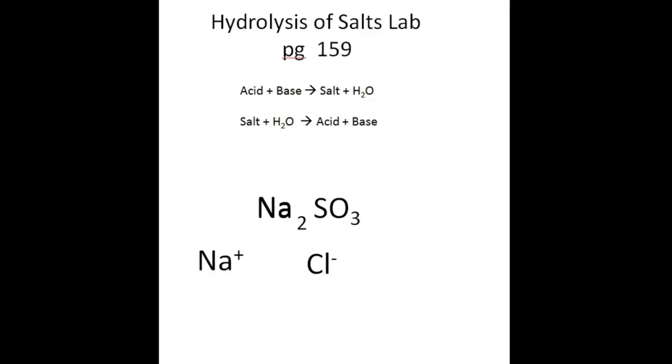The Na+ is going to get the negative hydroxide ion to make NaOH. That's going to be a strong base. Group 1 metals make strong bases. Group 2 metals make strong bases. That's a group 1 metal.